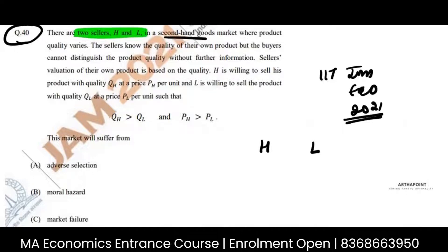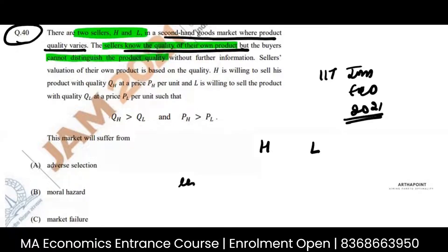In a secondhand goods market where product quality varies, the seller knows the quality of their own product. Of course the seller would know. But the buyers cannot distinguish between product quality. So there is less information.